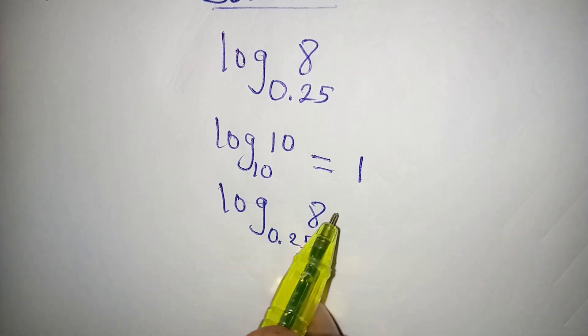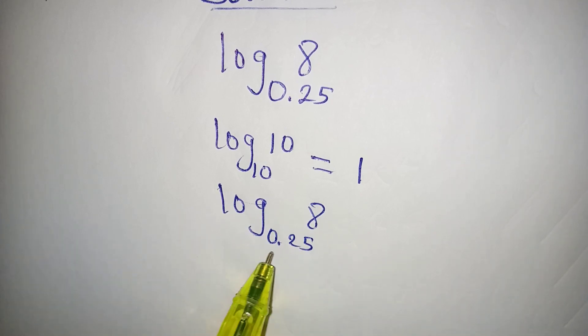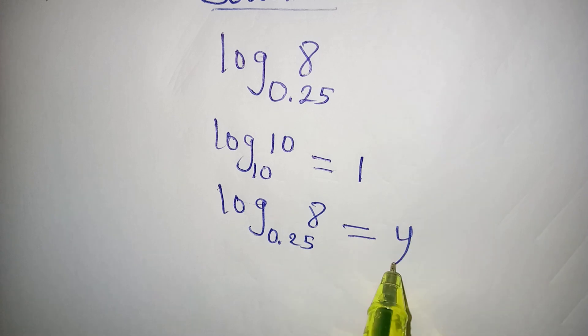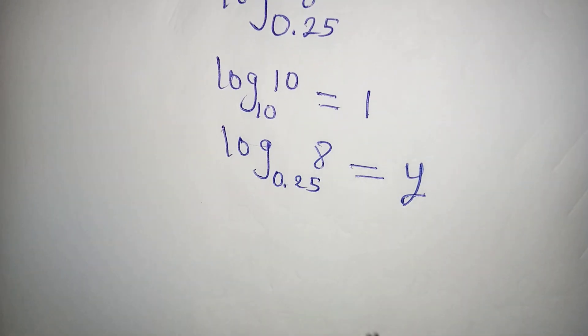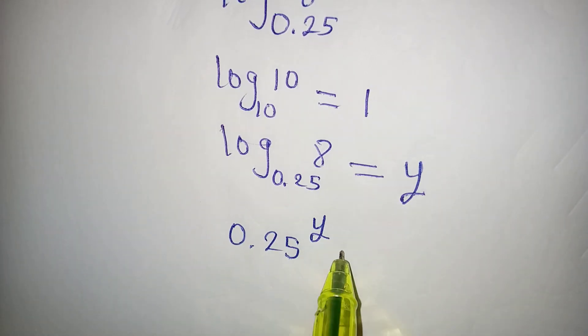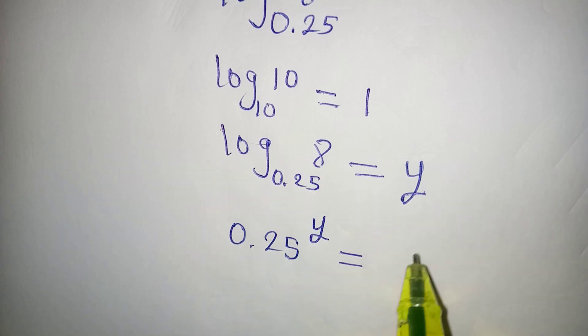So let's say that this is equal to y, and this means that 0.25 to the power of y should be able to give us 8. So this is what logarithm is about.